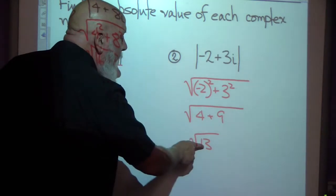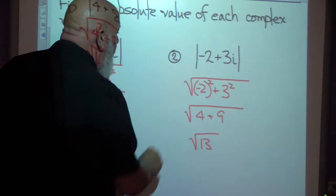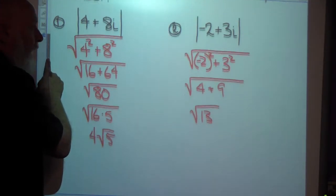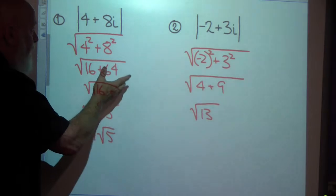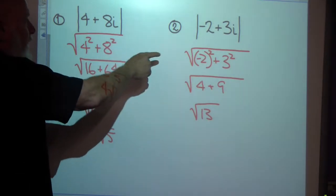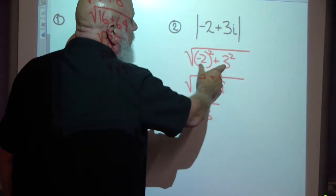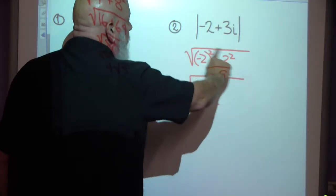We'll be applying what that means later on, but we need to know how to find the absolute value. That's how you do it: square these two numbers, add them together, take the square root.